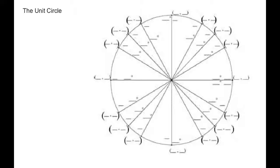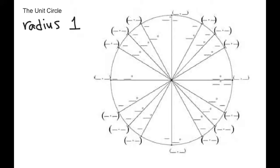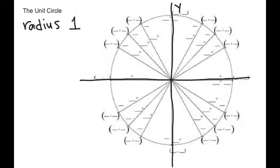This is the unit circle. The unit circle is a circle whose radius is 1 unit, and the circle is centered at the origin. So even though you don't see a coordinate plane attached to this particular circle, this is the y-axis and this is the x-axis, with the center being at the origin.